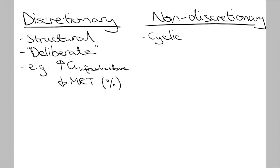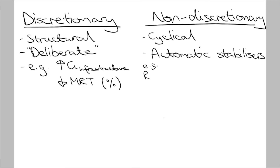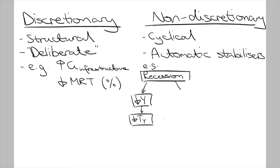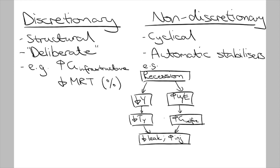Non-discretionary changes, on the other hand, are when the levels of government expenditure and taxes change with cyclical movements in economic activity, even without the government making any deliberate changes. These non-discretionary changes happen through automatic stabilizers. For example, during a recession, people will experience falling incomes and therefore pay less income tax. There will also be higher levels of unemployment, so government expenditure will increase through unemployment benefits. You can see how tax and government expenditure levels would automatically adjust to have a counter-cyclical effect on economic activity.